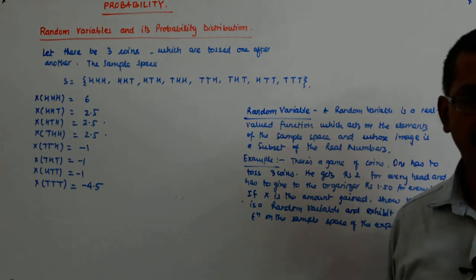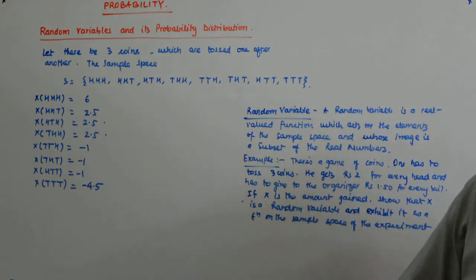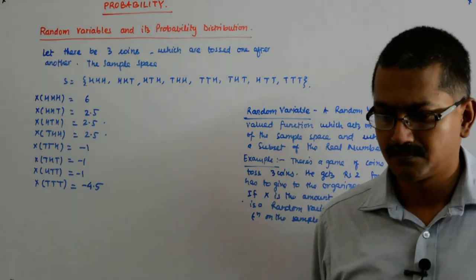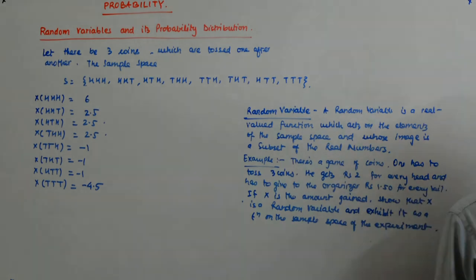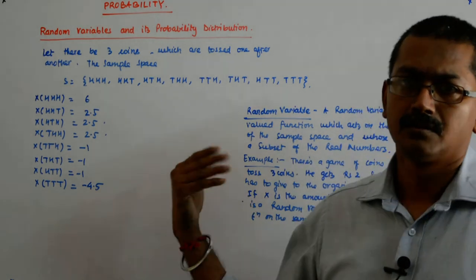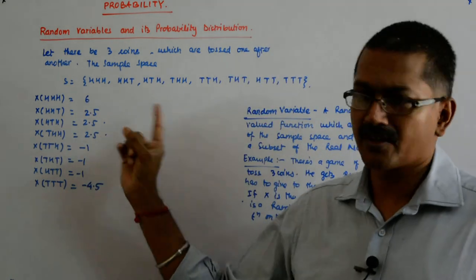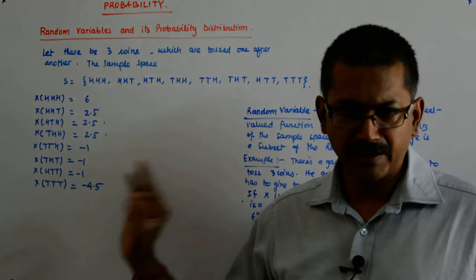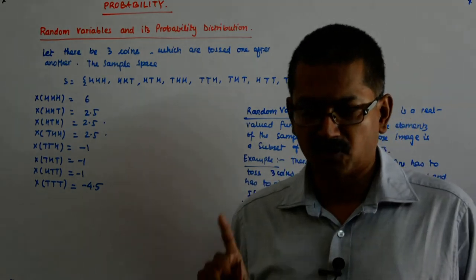So, what do we get? We get this. Yeah, this is a real-valued function. It is giving all the... this is a function first of all. That means, each has got a unique value. Okay.